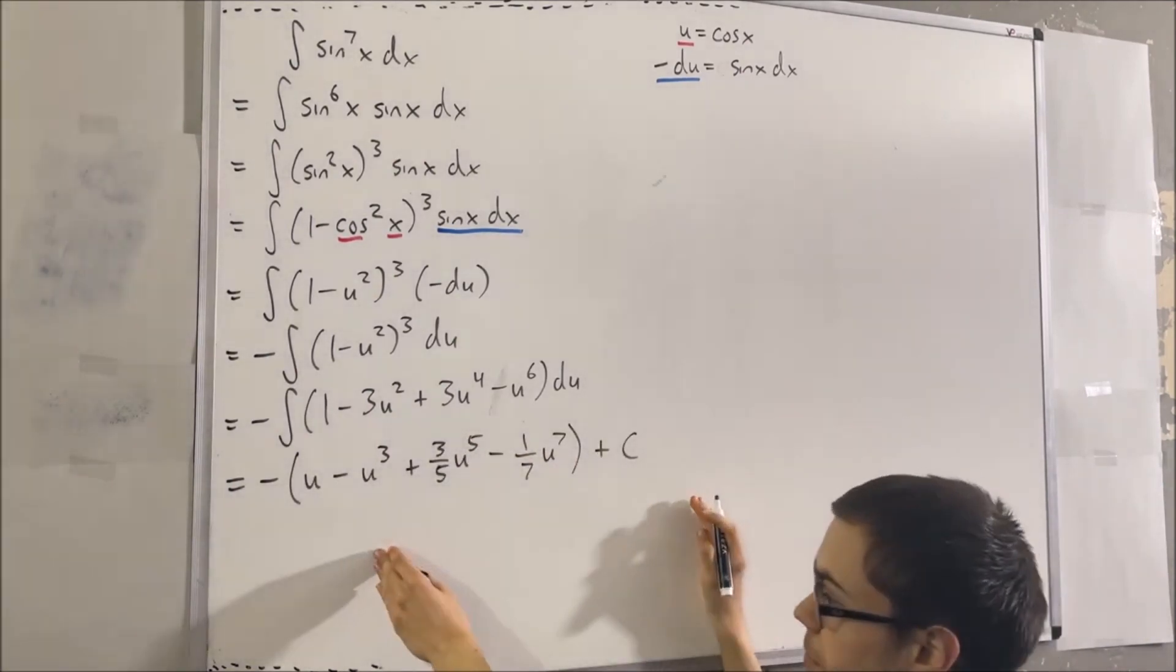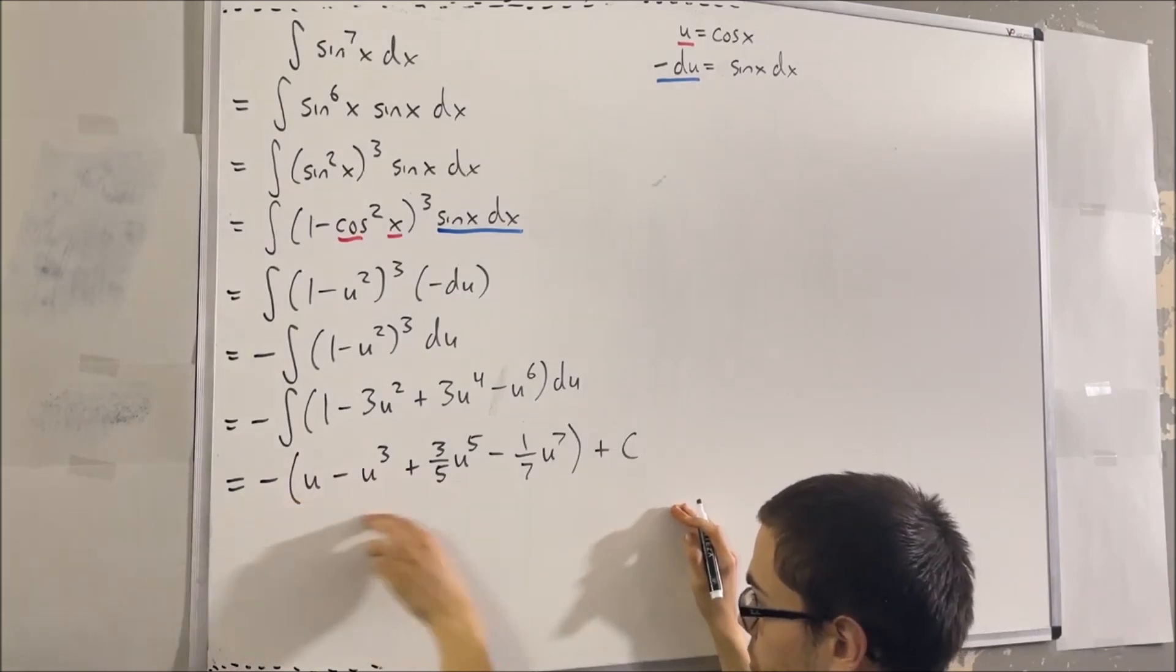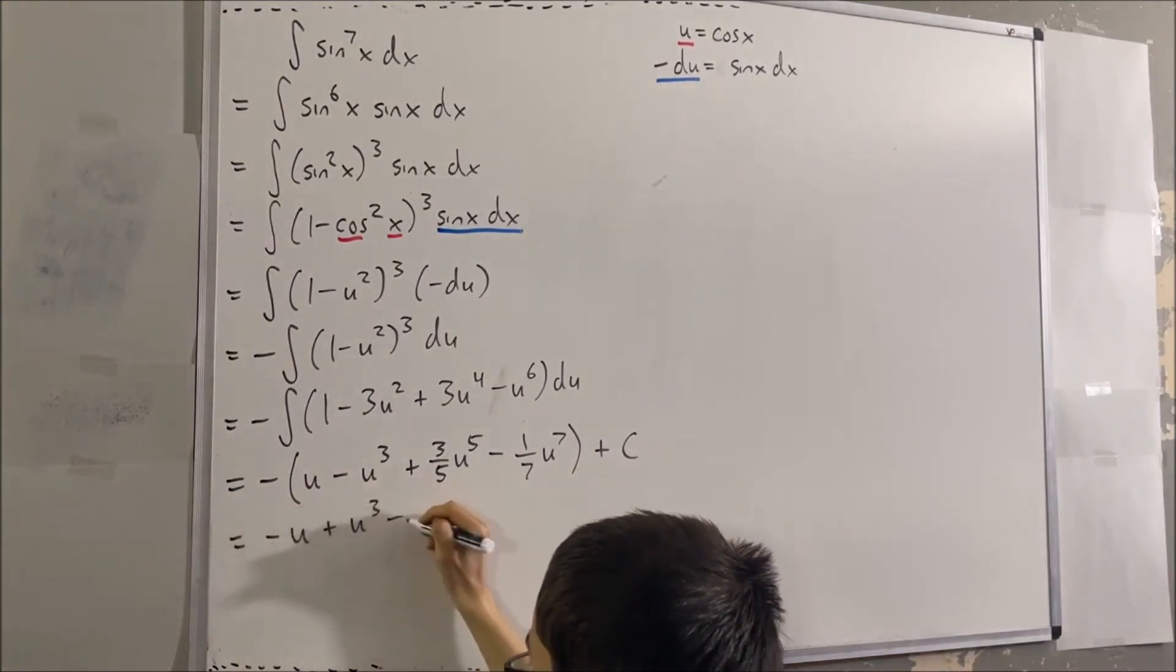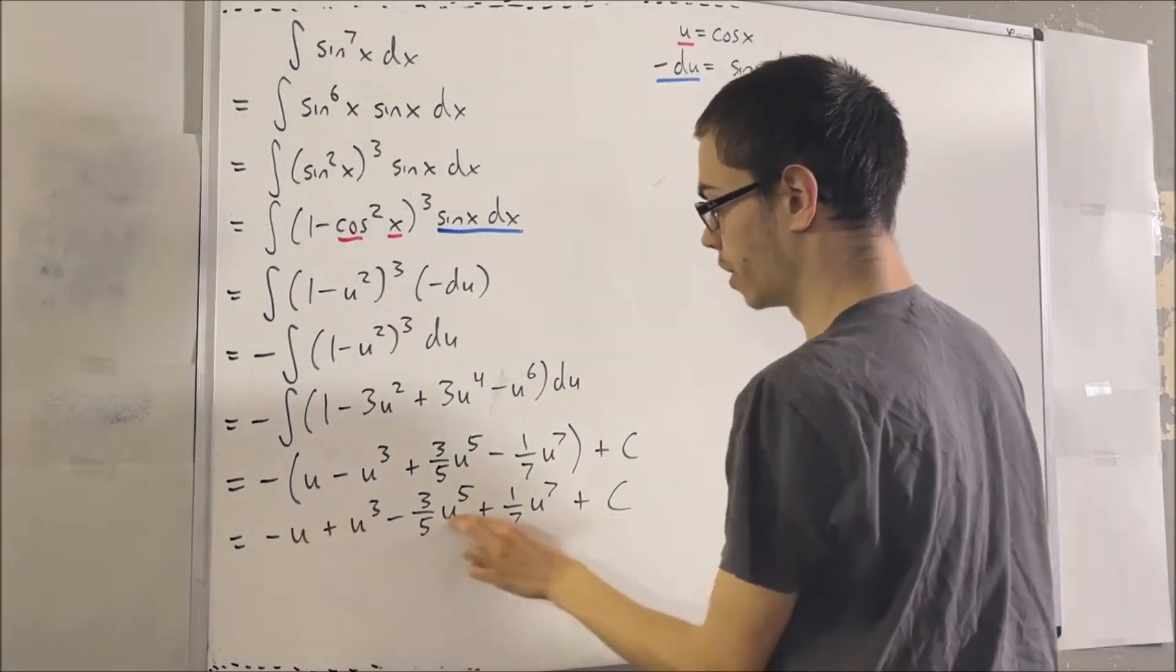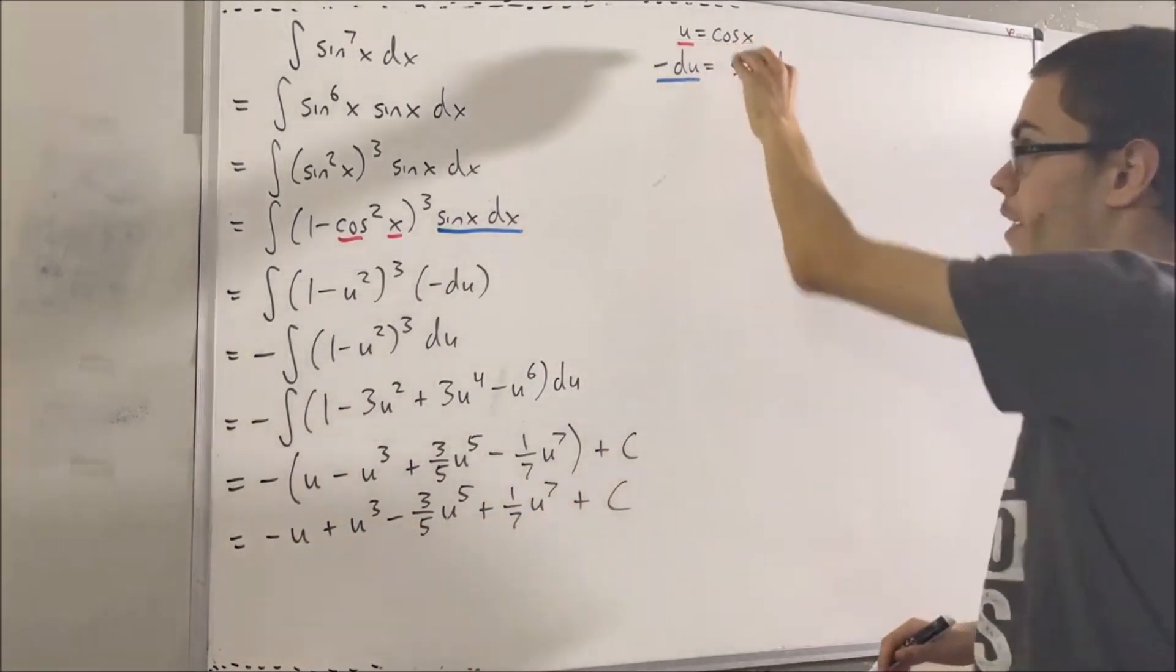And so now we can distribute the minus sign across. We would get this. And now, all we really have to do is replace the u back with cosine of x.